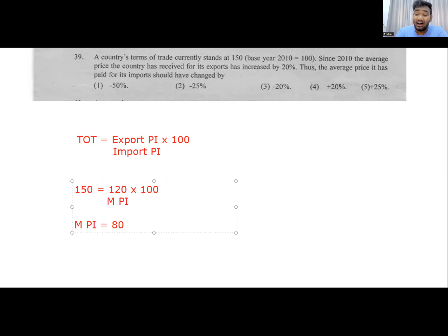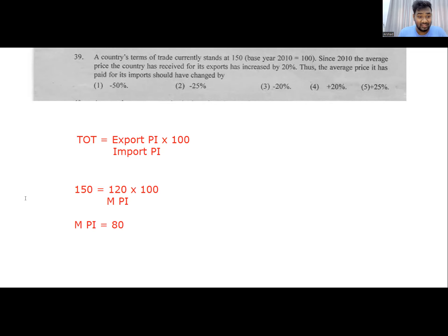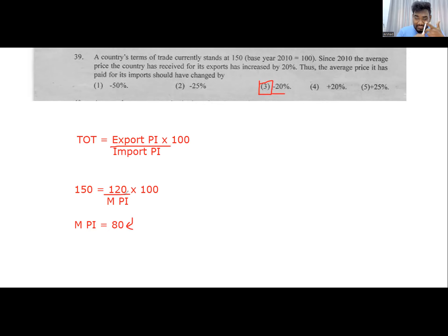Import price index is 80 — but that is not the final answer yet. In the base year, import price index was 100; now it is 80. It has fallen by 20 percent. So the import price index would have fallen by 20 percent. Be very careful: the answer is minus 20 percent.